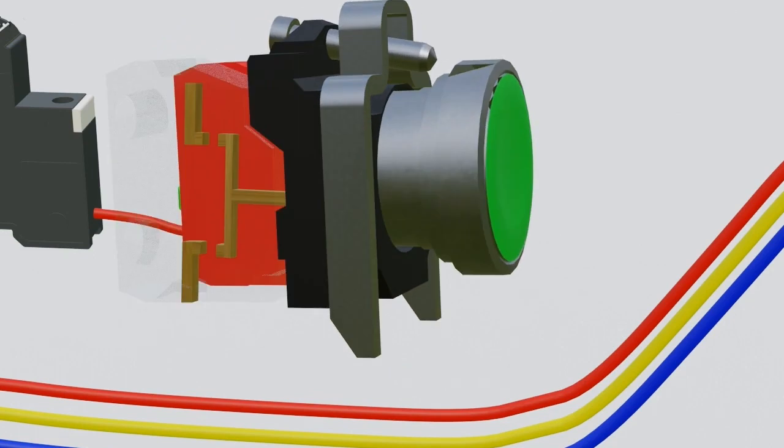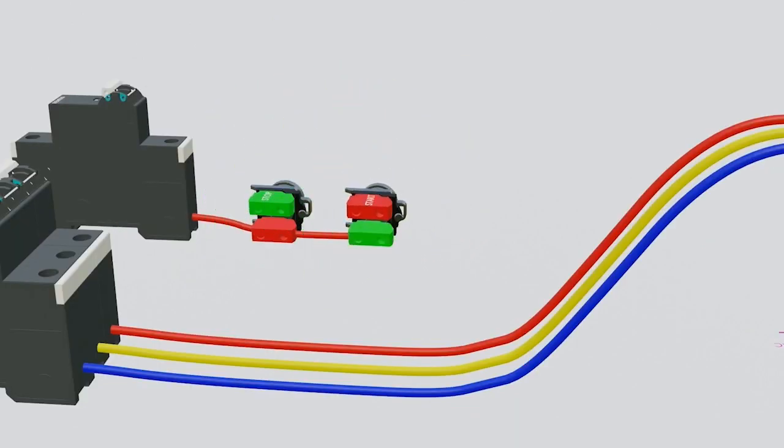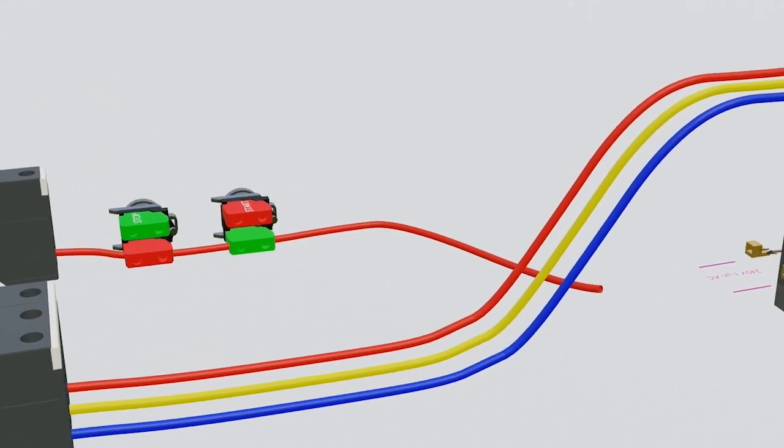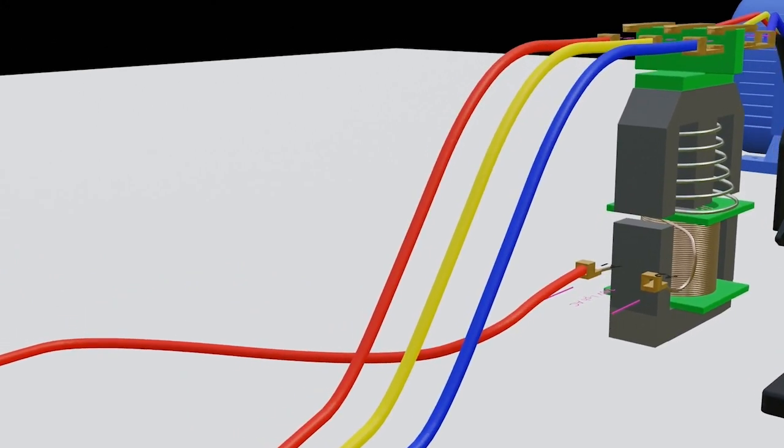Now, start pushbutton contact is normally open type, meaning NO type. As you press start button, it will change its normally open contact to closed condition. Supply gets out from the start pushbutton and goes to the coil A1 terminal.